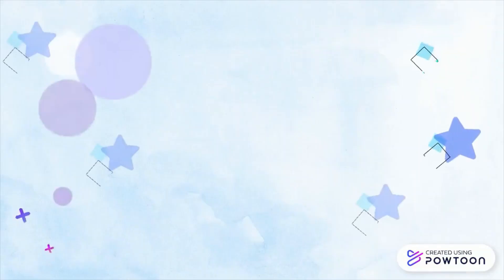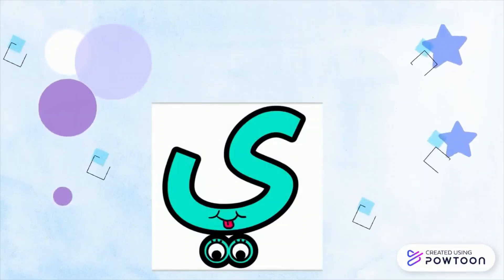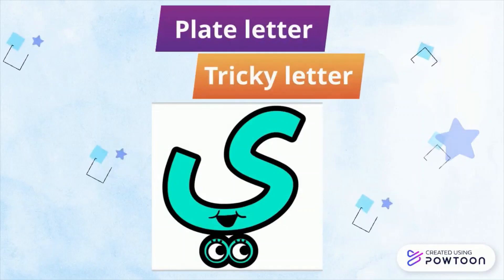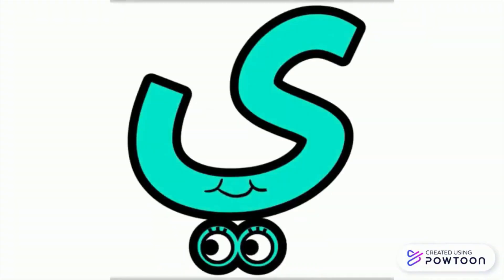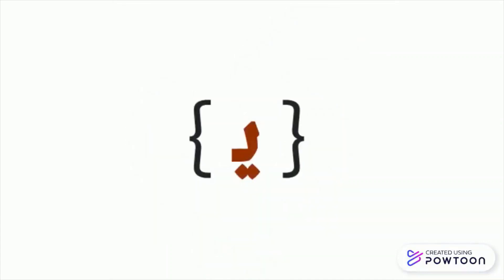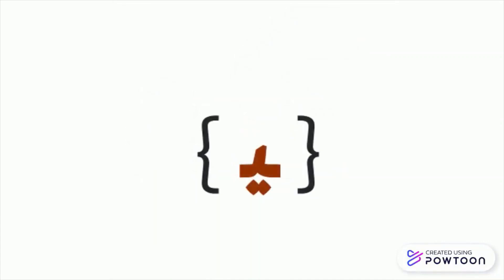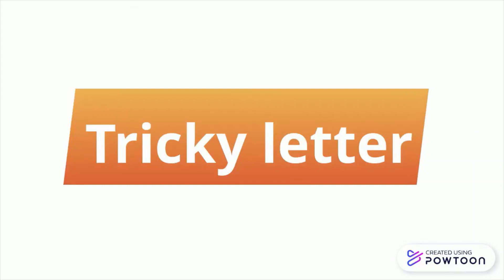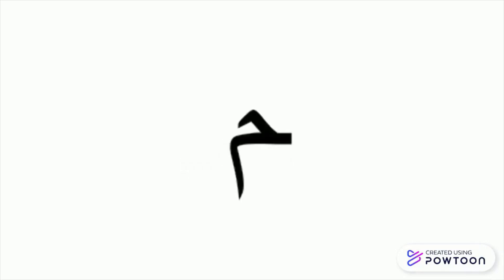Then we have the letter ya. The letter ya is both a plate letter and a tricky letter — it is always changing. At the beginning of the word it looks like this, in the middle like that, and at the end it will take a hand and look like that. By itself it looks like this.